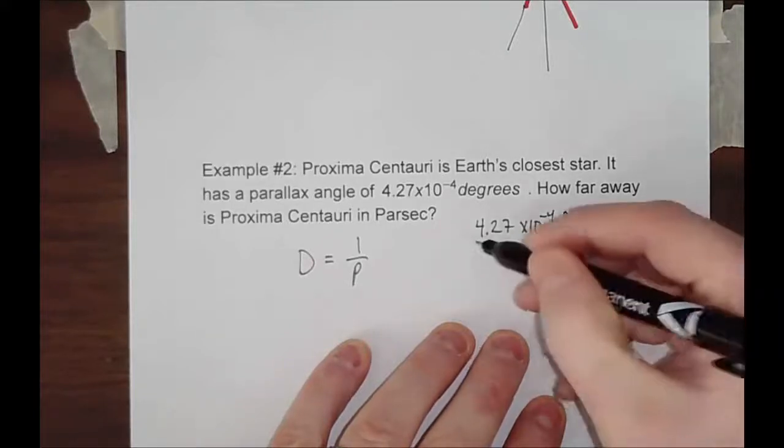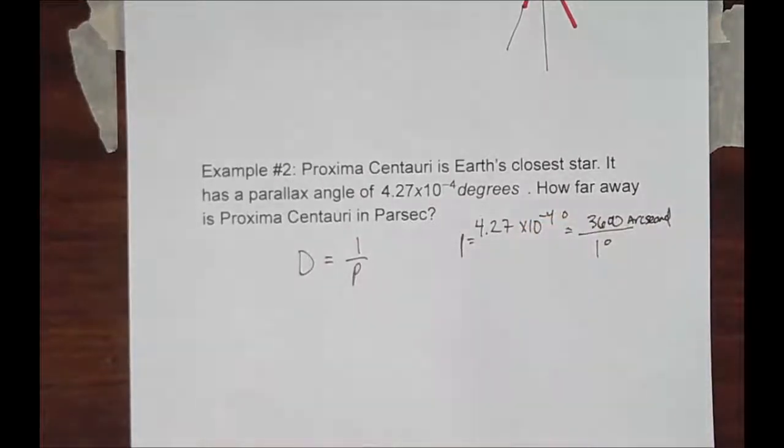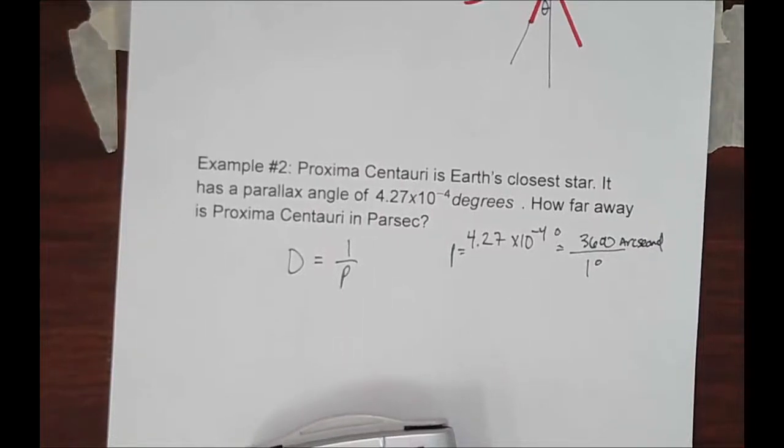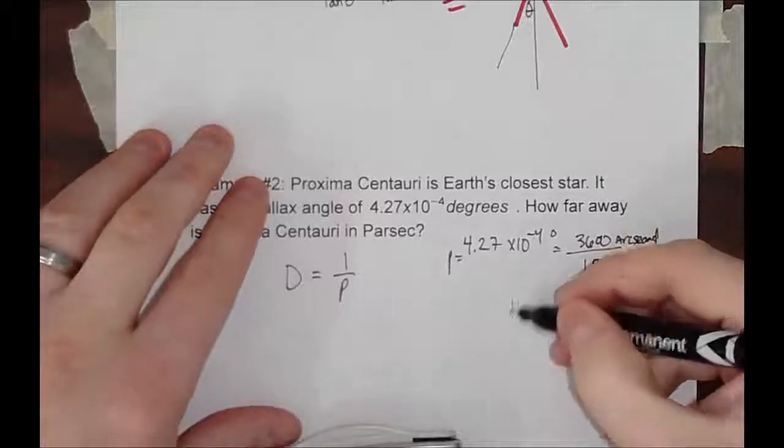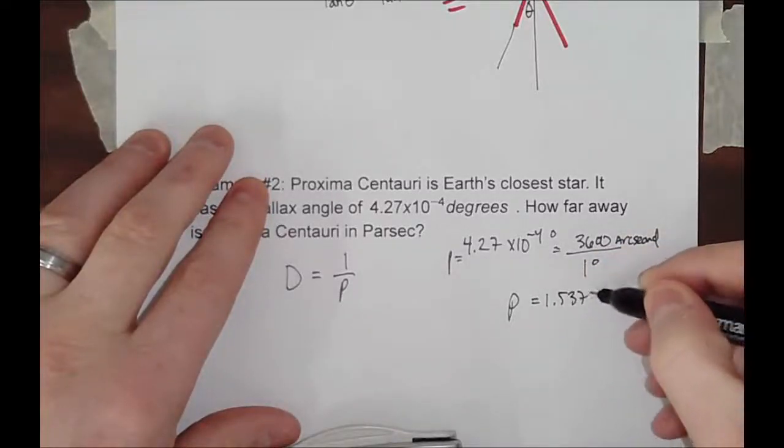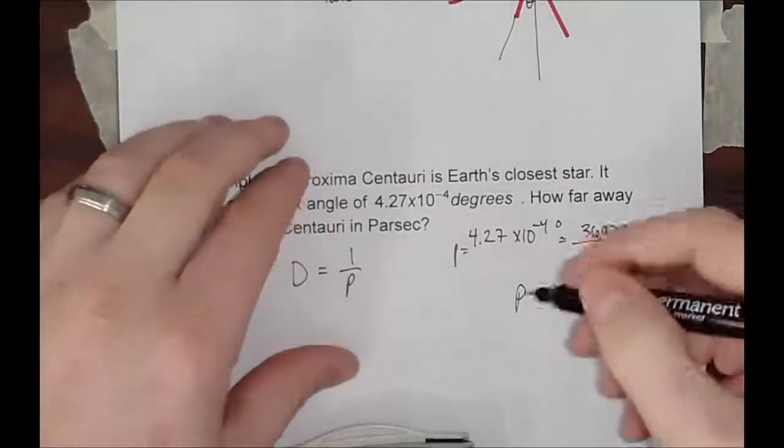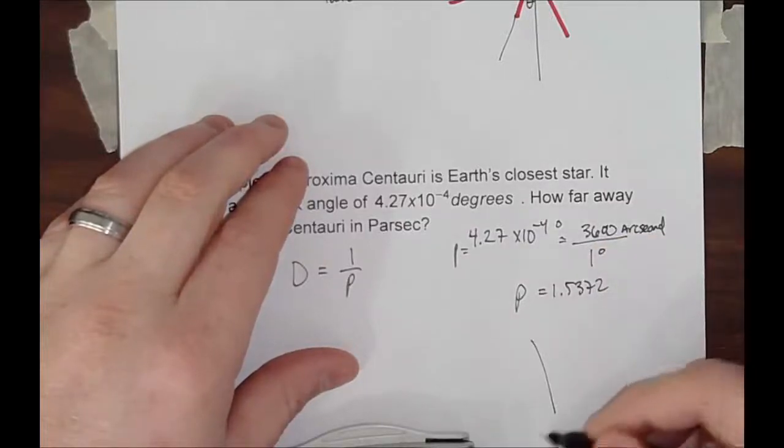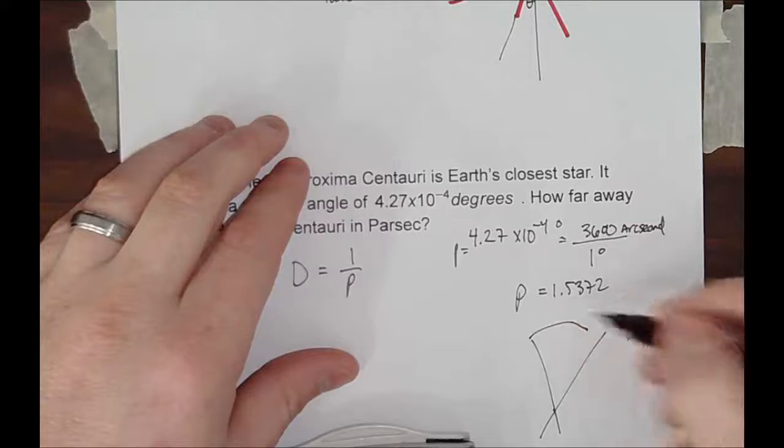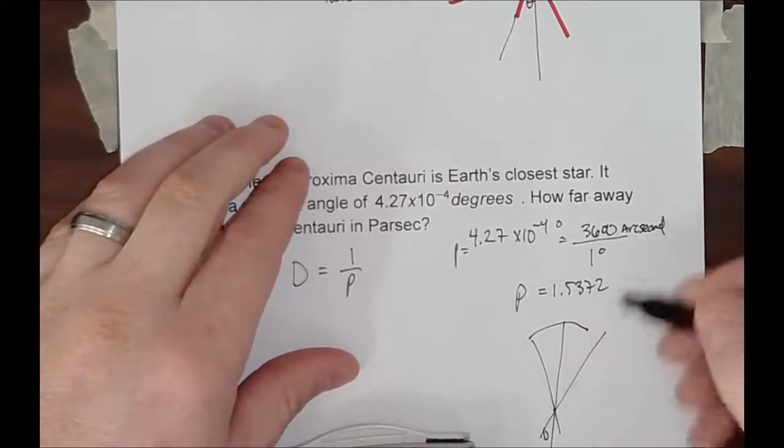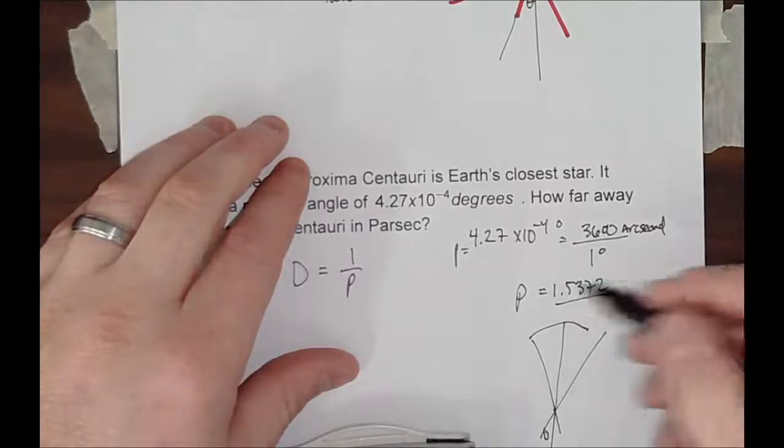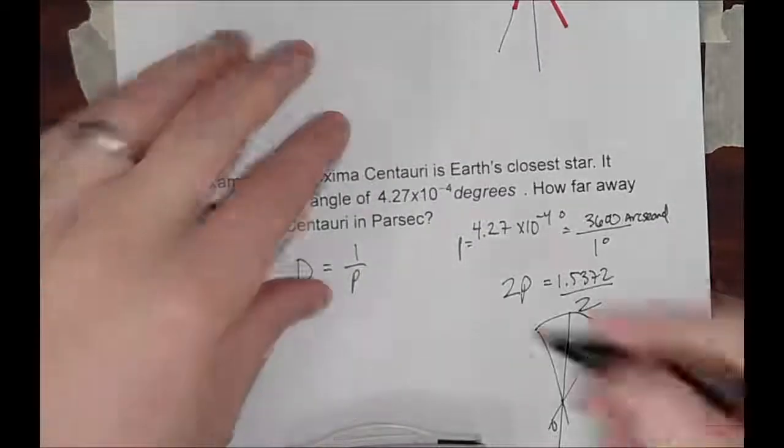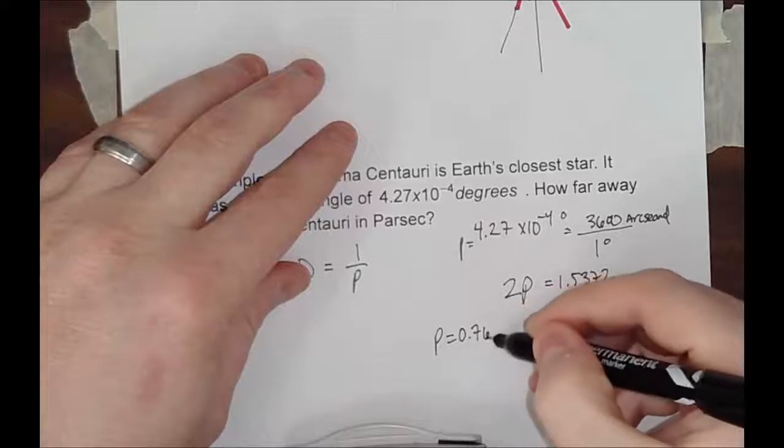And, this is going to give us our parallax angle for that. So, you're going to do 4.27 times 10 to the negative fourth times 3600. And, that gives me a parallax angle of 1.5372. Now, again, please know, this angle right here is actually how much this object appears to move. We have to take it and divide it in half. So, we really need to take this number and divide it in half. So, really, this is a 2 p, or 2 p, I think. So, we just divide that by 2, and we get a p of 0.7686 arcseconds.